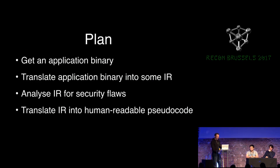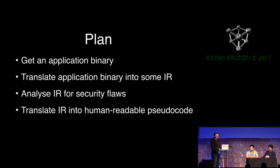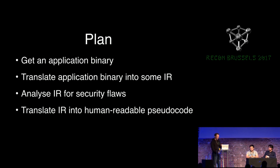Here is our plan. First, we would like to obtain an application binary, then we will translate this binary into some internal representation, analyze this representation for security flaws, and then translate it into human-readable pseudocode. This last step is important because we want to show each vulnerability in some human-readable context.